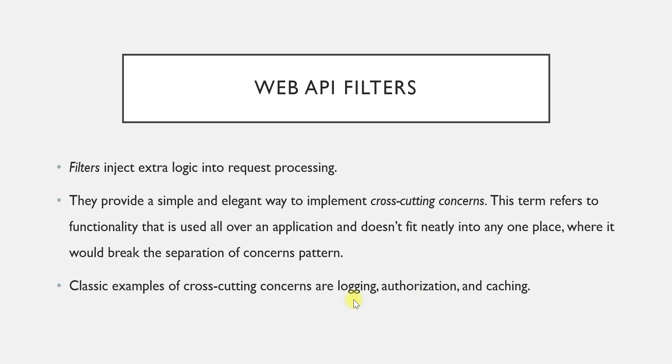If we try to place cross-cutting concerns in one place it would break the separation of concern pattern. The classic examples of cross-cutting concerns are logging, authorization, and caching. Logging can be any kind of logging — for example, error logging: whenever there is an error, you want to log those details somewhere, either in a plain text file or in a database.